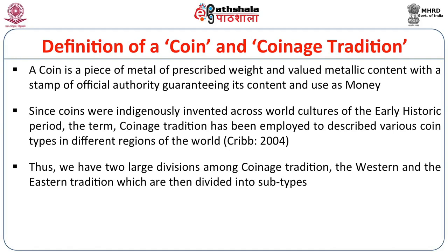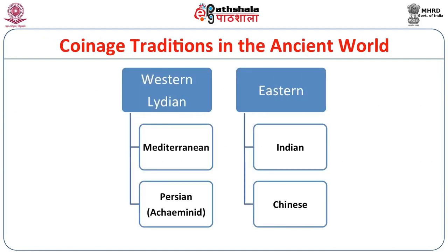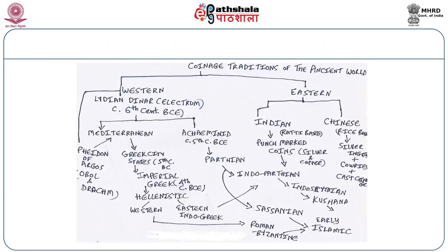The Western tradition began in the Mediterranean world and spread to the Persian world. The coinage traditions of the ancient world began with the Lydian Dinar, dated to about the 6th century BC. From there it spread to the Mediterranean world, then the city states of Greece, and finally to Imperial Greece in about the 4th century BC. It also spread to the Persian-speaking world under the Achaemenids in about the 5th century BC, and from there to the Parthian period, and eventually to India.